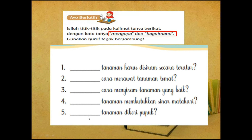Kemudian nomor lima: tanaman diberi pupuk. Kata tanyanya adalah mengapa. Mengapa tanaman diberi pupuk. Nah, nanti ini anak-anak kerjakan di buku tematik dengan cara mengisi kata tanya mengapa atau bagaimana dengan huruf tegak bersambung.